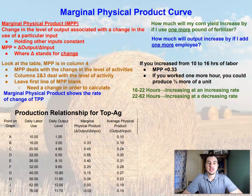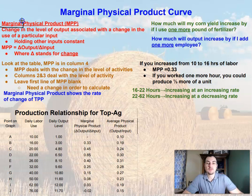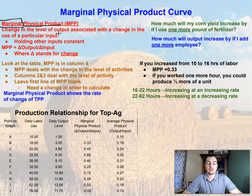Now that we've covered the total physical product and the total physical product curve, let's dive into the marginal physical product. If you remember, marginal means change — the word marginal means change. And physical product means output. So we're looking at the change in output. The technical definition is a change in the level of output associated with the change in the use of a particular input.